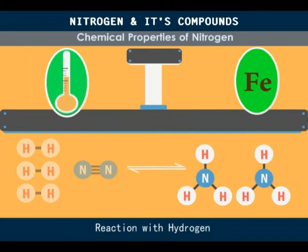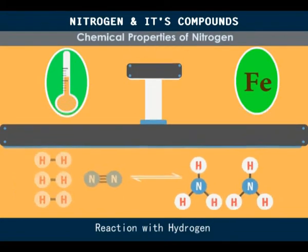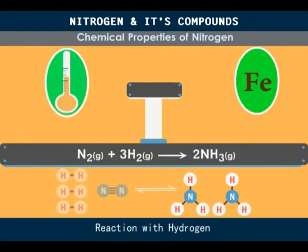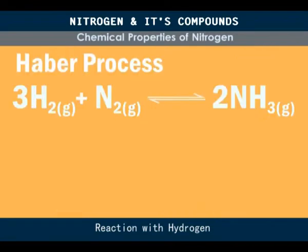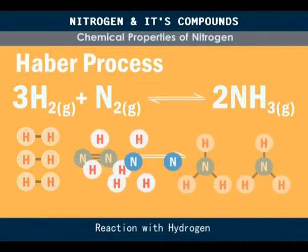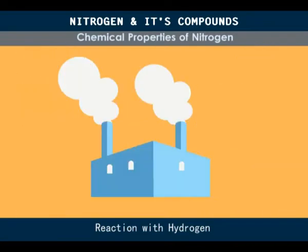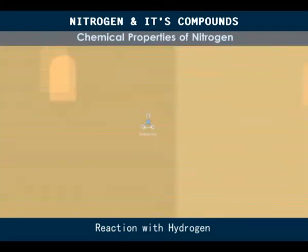Nitrogen and hydrogen will combine when heated in the presence of an iron catalyst and high pressure to form ammonia. This reaction is used for the industrial manufacture of ammonia.